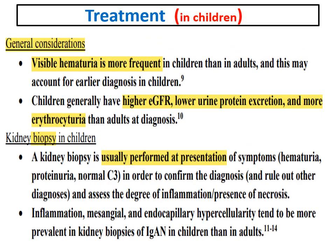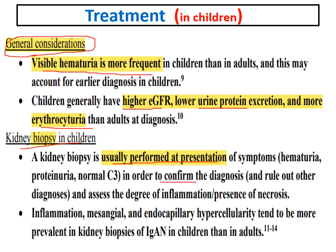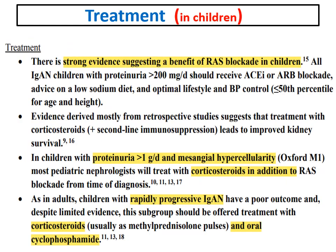IgA nephropathy in children: visible hematuria is more frequent in children, who usually have higher GFR, lower proteinuria, and more erythrocyturia. Kidney biopsy is usually performed at presentation with hematuria, proteinuria, and normal C3 to confirm the diagnosis. There is strong evidence of benefit of RAS blockade in children with proteinuria more than one gram and mesangial hypercellularity. Most pediatric nephrologists treat with steroids plus supportive care, and in children with rapidly progressive IgA nephropathy, steroids with oral cyclophosphamide can be used.